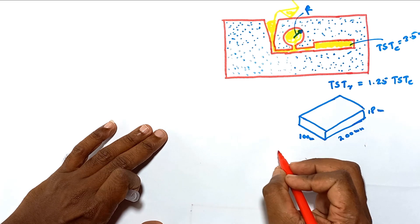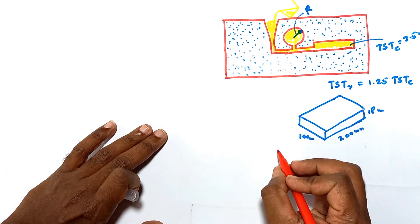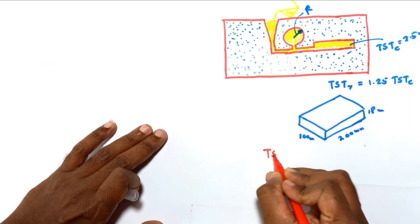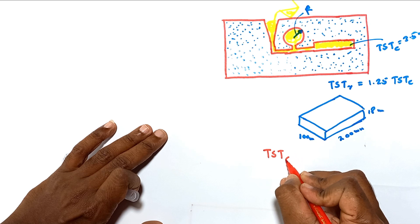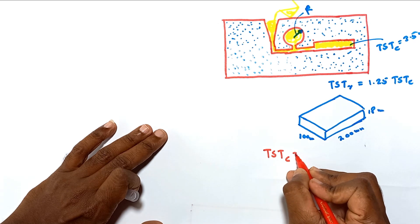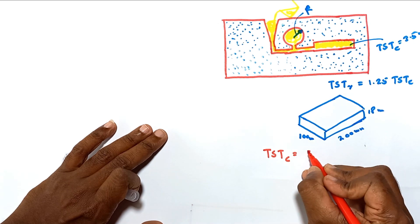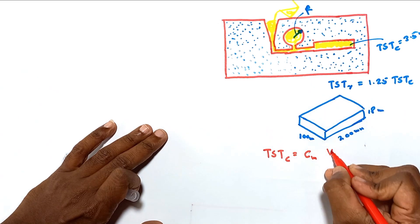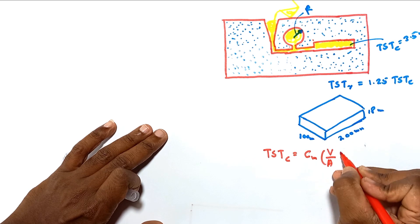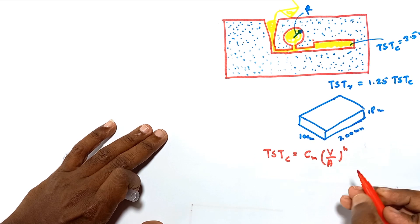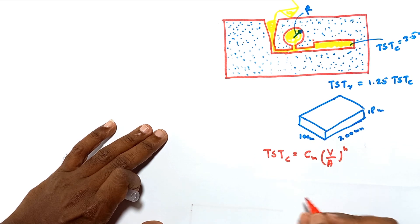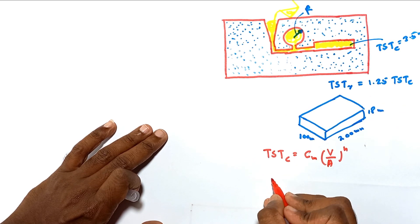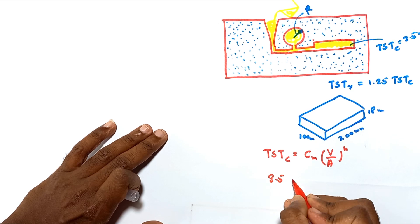We are going to use Chvorinov's Rule to find the mold constant. The total solidification time of the casting equals the mold constant C_m multiplied by (V divided by A) squared. The total solidification time of the casting is given as 3.5 minutes.